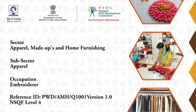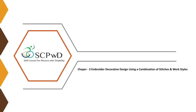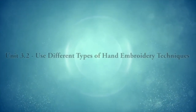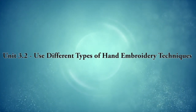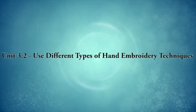Sector: Apparel, Made-ups and Home Furnishing. Sub-sector: Apparel. Occupation: Embroiderer. Reference ID: PWD AMH Q1001, Version 1.0, NSQF Level 4. Chapter 3: Embroiderer Decorative Design Using a Combination of Stitches and Work Styles. Unit 3.2: Use Different Types of Hand Embroidery Techniques.